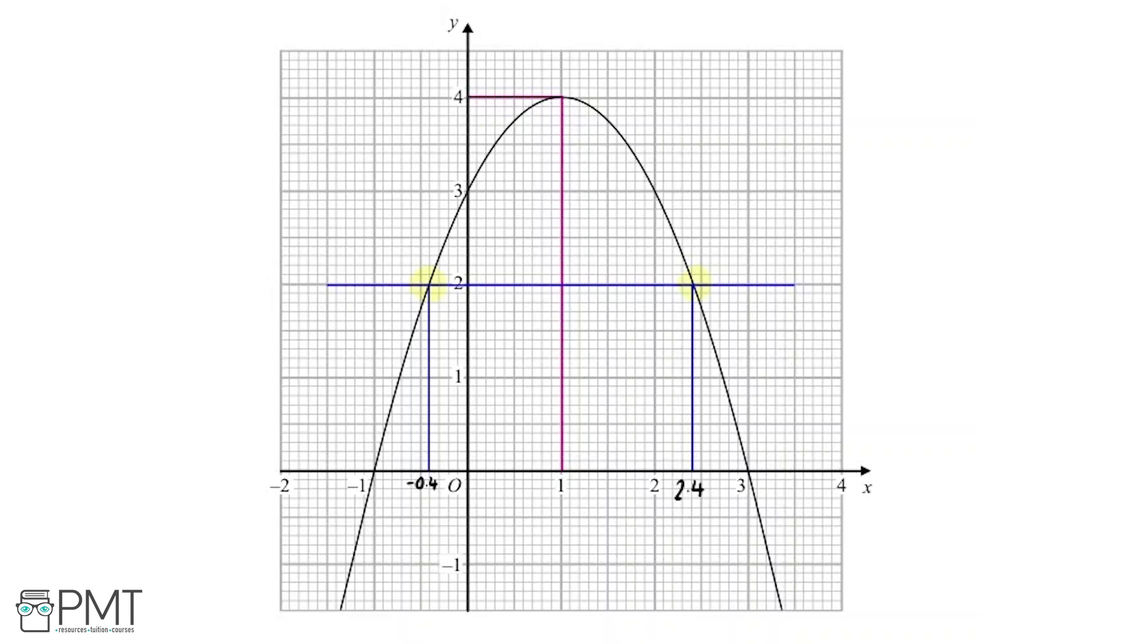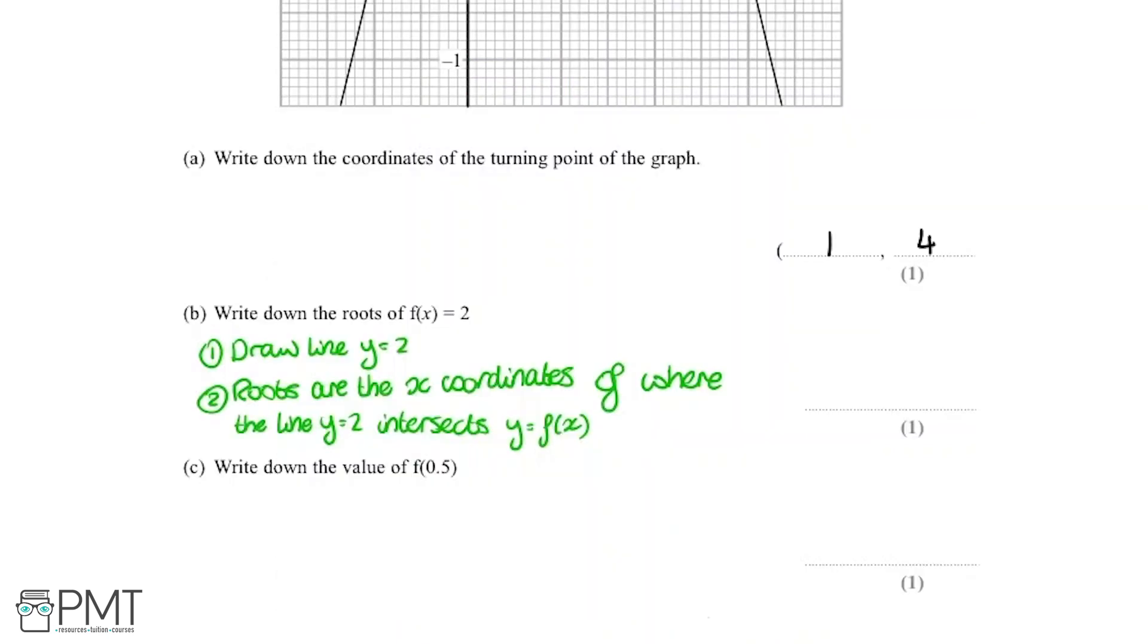Now we've found both the roots they want, and we're going to write them down in the answer box here. We've got 2.4 and minus 0.4.